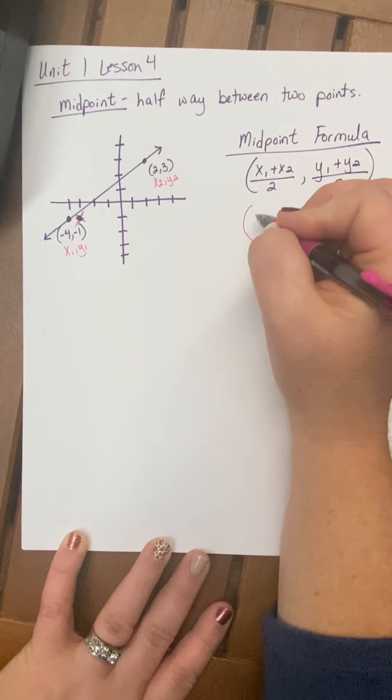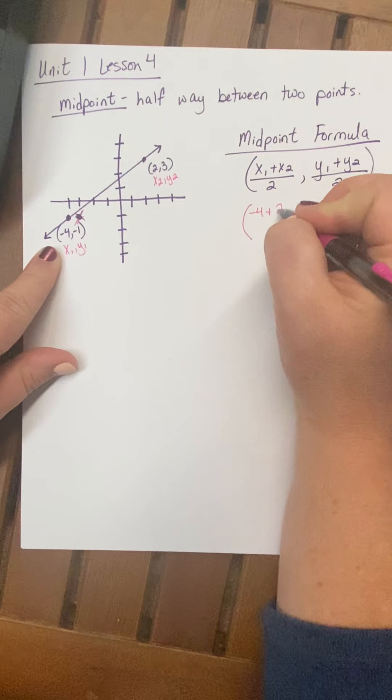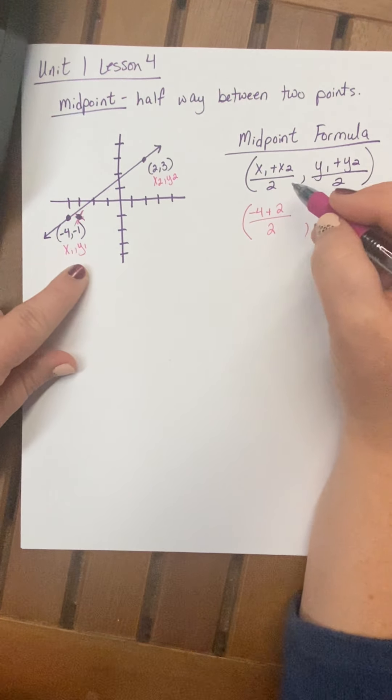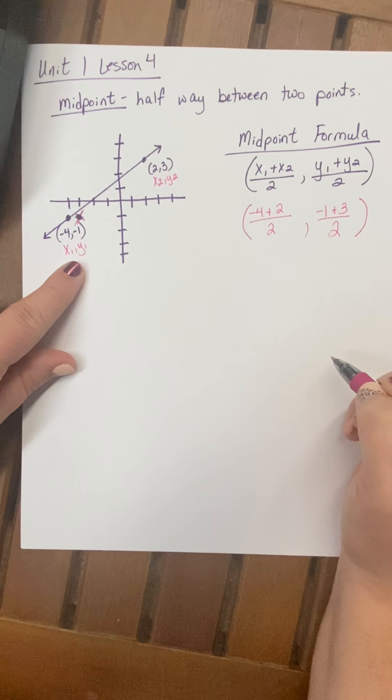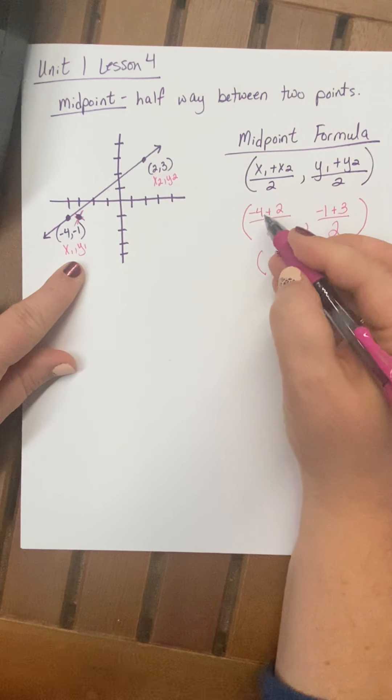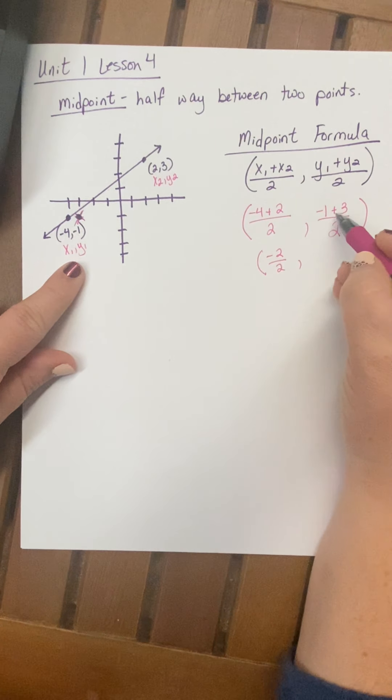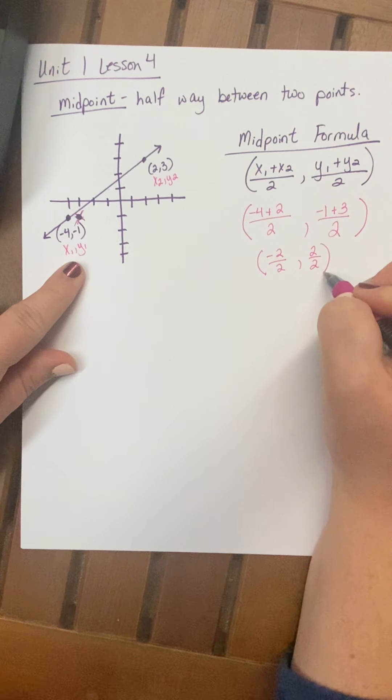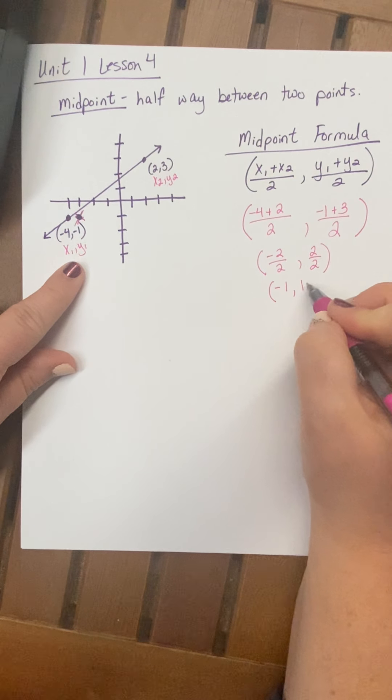Okay, so x1 is negative 4 plus x2, which is 2, divided by 2. Y1 is negative 1 plus y2, which is 3, divided by 2. Okay, now I'm going to simplify those fractions. Negative 4 plus 2 is negative 2 over 2, and negative 1 plus 3 is 2 over 2. So when I simplify that, my point is negative 1, 1.